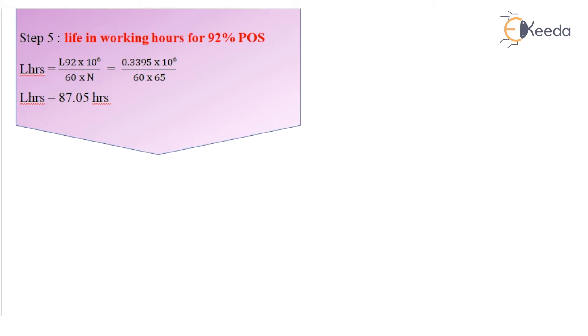Next, now is life in working hours for 92% probability of survival. So I have the formula Lhrs = L92 × 10^6 / (60 × N). So I get the value of Lhrs as 87.05 hours by substituting the value of L92 as 0.3395.